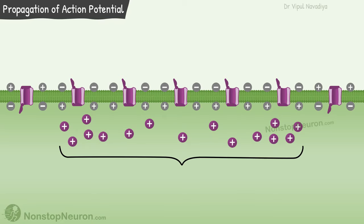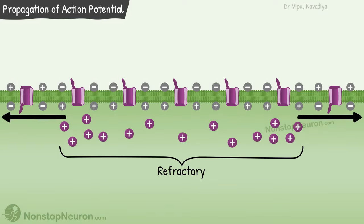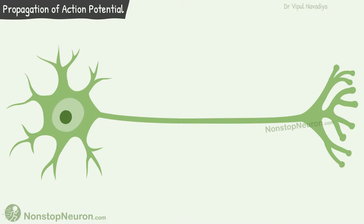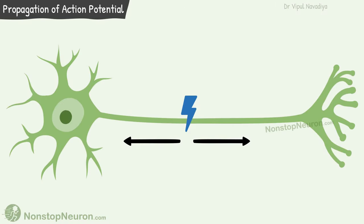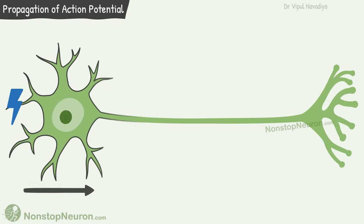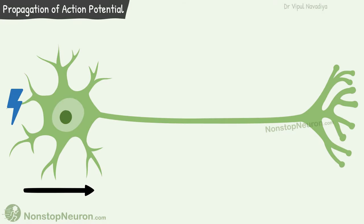The area from where the action potential has just passed is refractory, so the action potential does not travel back — it only goes away from the stimulus. If a nerve is stimulated from the center, the action potential passes in both directions. But if it's stimulated from one end, the action potential travels to the other end. This is how action potential propagates in an unmyelinated nerve fiber.